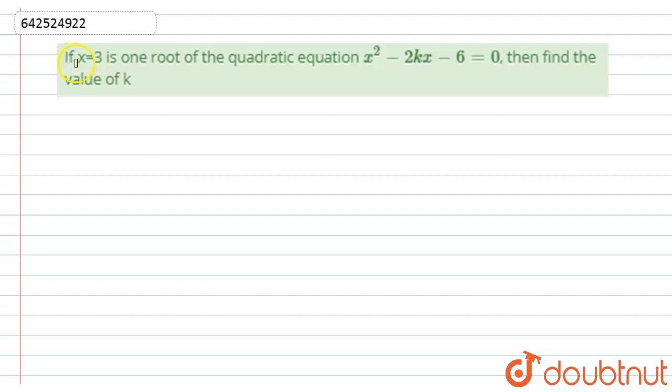Hello student, let us start with the question. Here we have given, if x equals 3 is one root of quadratic equation x square minus 2kx minus 6 equals 0, then find the value of k.